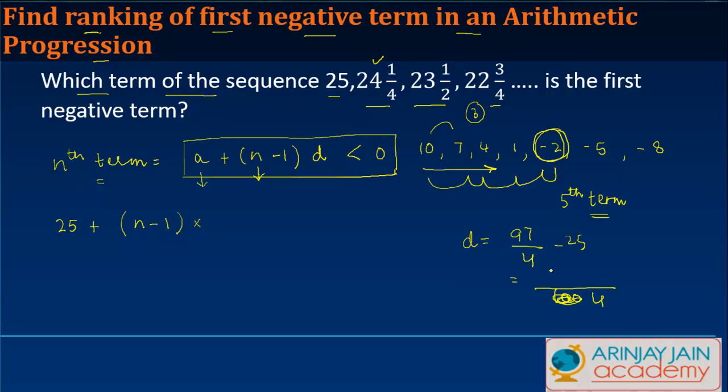is -3/4. So we have 25 + (n-1) × (-3/4) < 0.